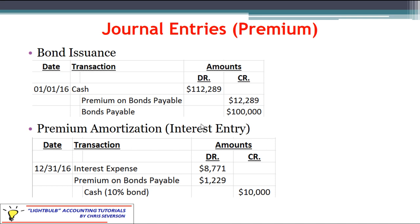Notice we credited the full premium. To amortize that premium over the life of the bond, every time we have interest we have to debit it. If we start off with a big credit we're going to see small debits every year, every payment.